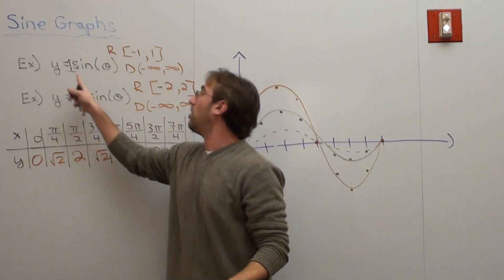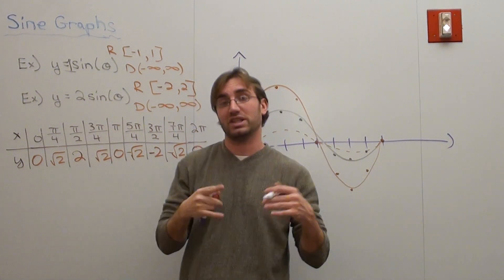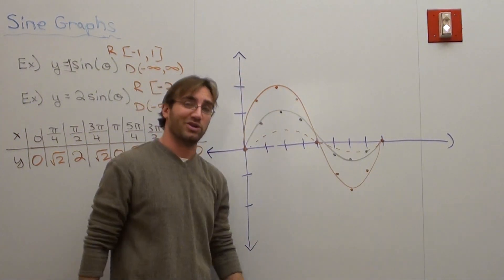It doesn't affect the period either. The period is still 2 pi. All this number does, in front of the sine theta, when you multiply it, is it affects something called its amplitude. Basically, how high or how low the graph goes.